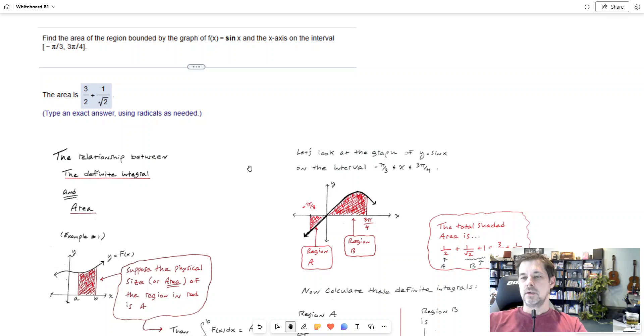Well greetings everybody. So I want to take a few minutes to talk about this problem from our assignment which says can you calculate the area of the region bounded by the curve sine x and the x-axis on the interval from negative pi over 3 to 3 pi over 4.